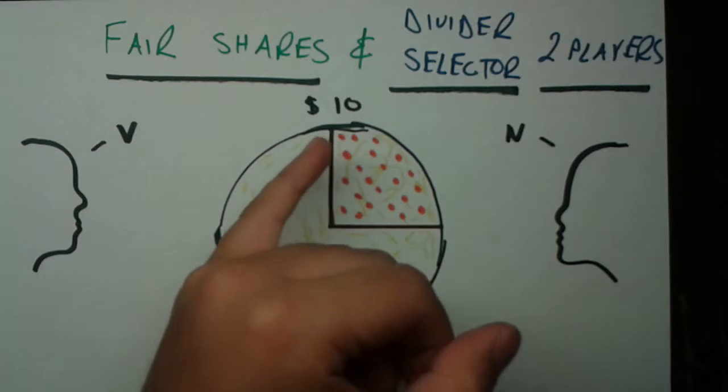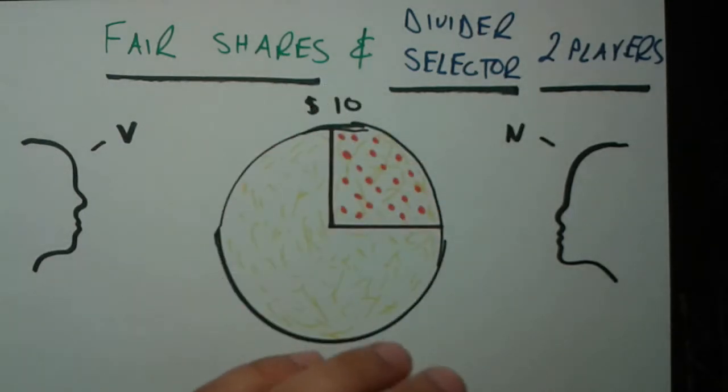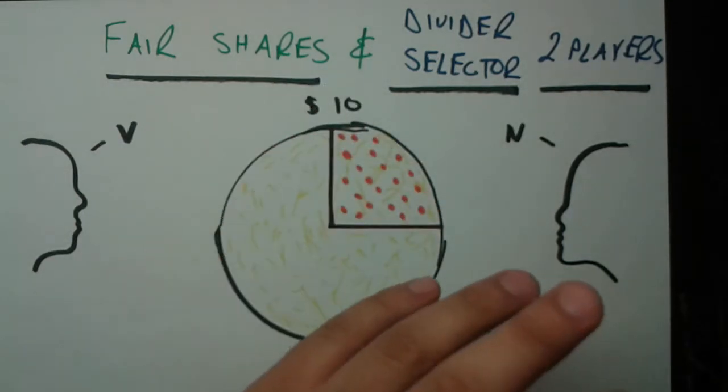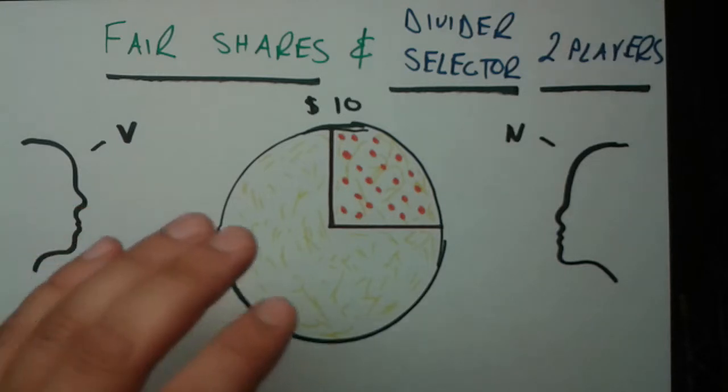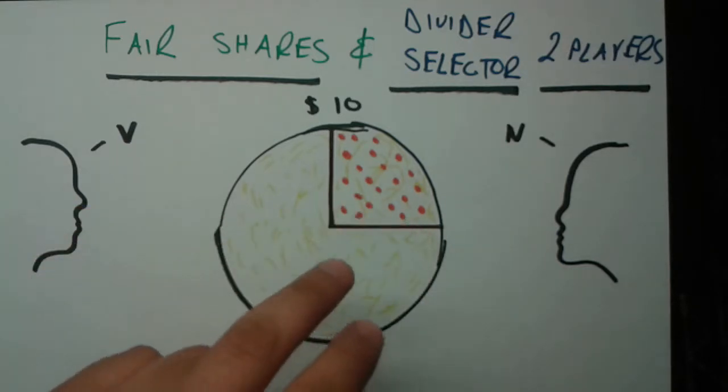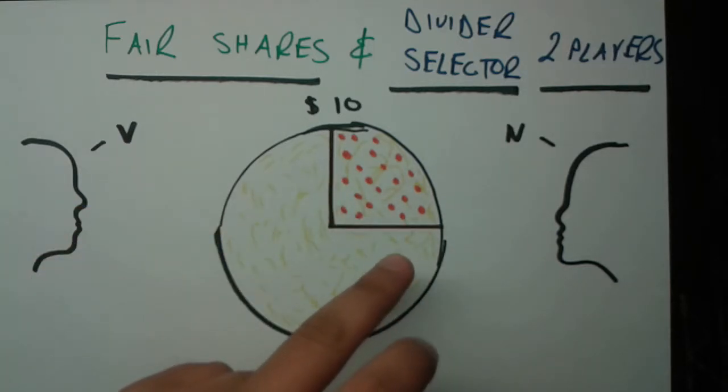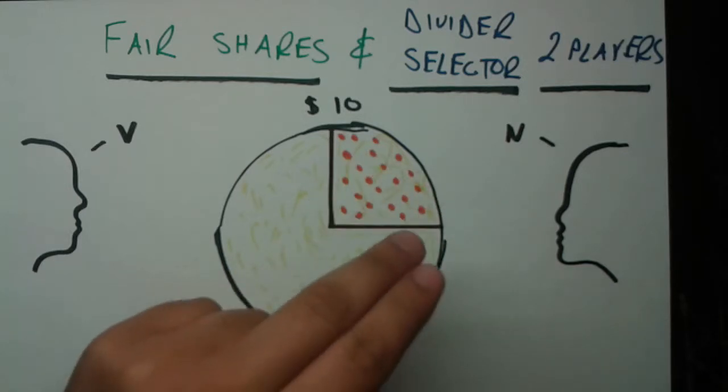Furthermore, he doesn't care whether he gets pepperoni or cheese. He's indifferent between them. I've written here that this pizza is worth $10 total, but this $10 is broken up differently between these two people. For the vegetarian person, obviously he cannot eat the pepperoni, so the remaining three-fourths of the pizza, the cheese, is where all of his $10 is. And the pepperoni slice is $0 for him.